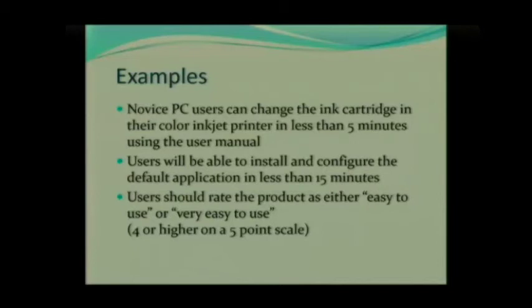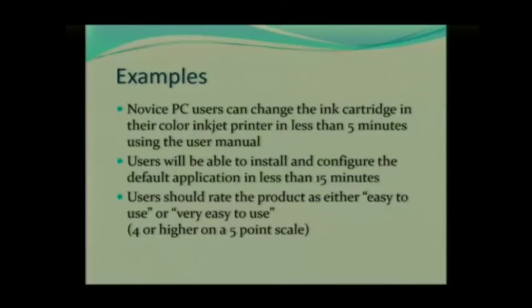Third example: 'Users should rate the product as either easy to use or very easy to use — four or higher on a five-point scale.' The performance criteria is that they rate it as easy to use or very easy to use, with further clarification of what that means. What we're asking users to do is to rate the product, so this would go in your exit questionnaire. It still has to have all these components though. When you create these things, it makes it so much easier to create your final report.